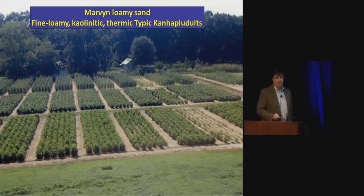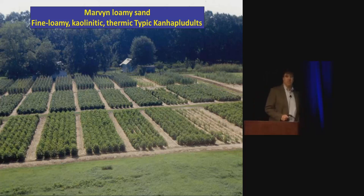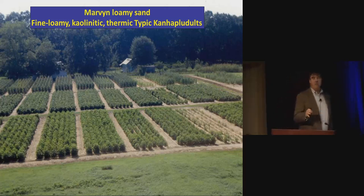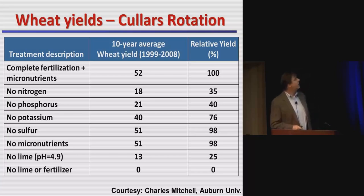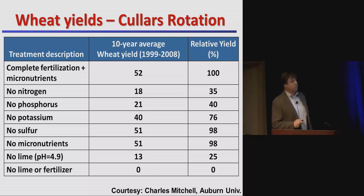I'm going to talk about nitrogen today, but I want to make a quick point using the Colors Rotation. If you're not familiar with it, it's just down the road here on South College, where the museum is on the left. It's a fertility trial that's been in place for over 100 years with wheat in the rotation and different fertility strips across it. This data was obtained from Charlie Mitchell, who is the curator of the Colors Rotation.